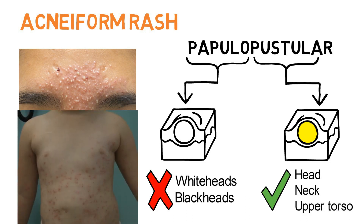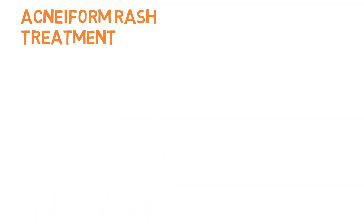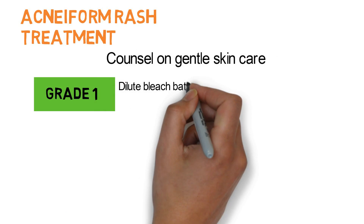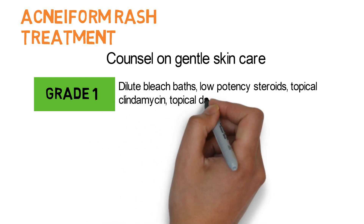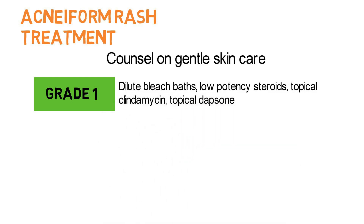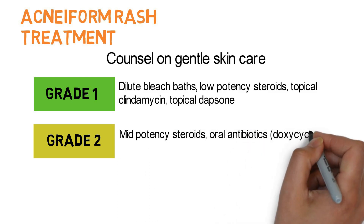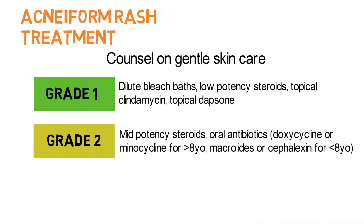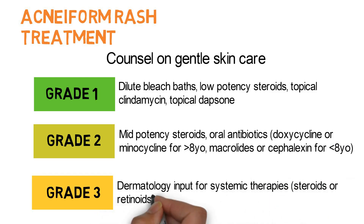A similar rash, known as a folliculocentric eruption, can present with a follicular distribution anywhere on the body. Treatment involves counseling on gentle skin care. For grade 1, the patient can take dilute bleach baths and may be prescribed low-potency topical steroids. The patient may also be prescribed topical clindamycin or topical dapsone to control inflammation. For grade 2, mid-potency topical steroids and oral antibiotics can be used. Doxycycline or minocycline can be used for children over 8 years old, and macrolides or cephalexin can be used for those less than 8 years old.